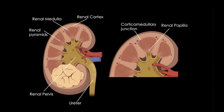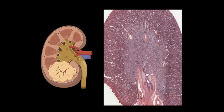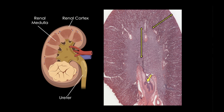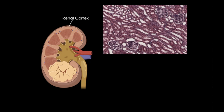The tips of the pyramids are called papilla, and these project into a minor calyx or calyces that collect the formed urine of one lobe. These minor calyces drain into major calyces, which eventually drain into the ureter and exit the body. Here's a microscopic view of what we just looked at in the cartoon, showing the cortex, the medulla, and the ureter. Now let's zoom in and look at these regions more closely.